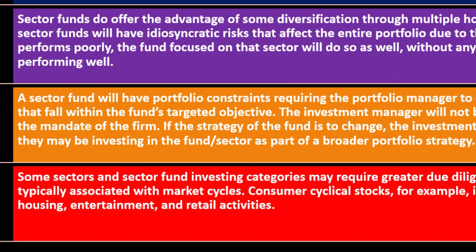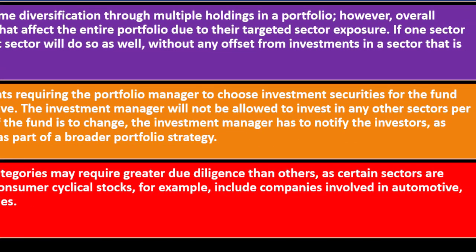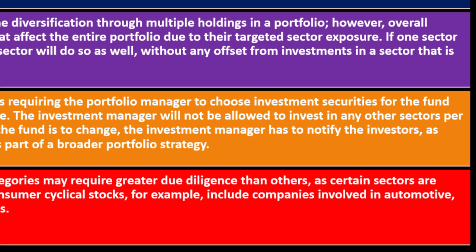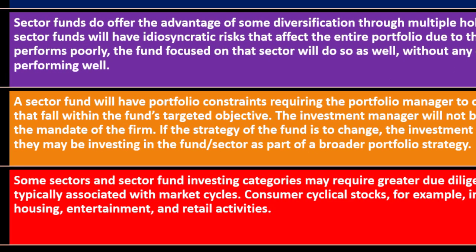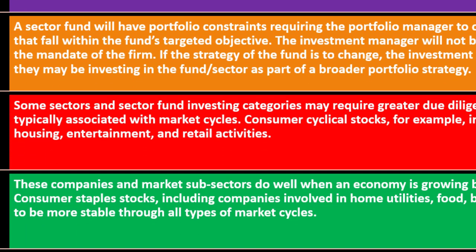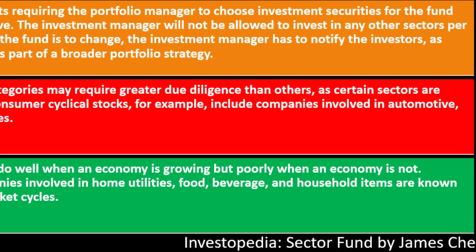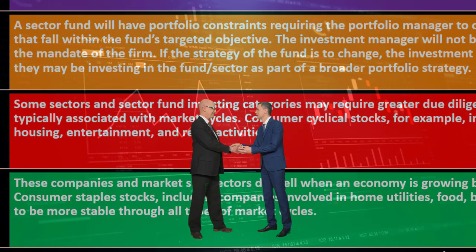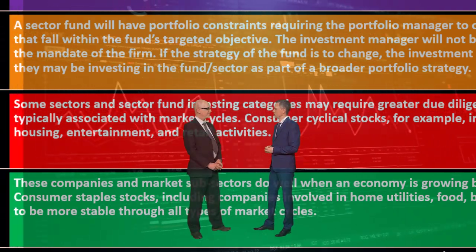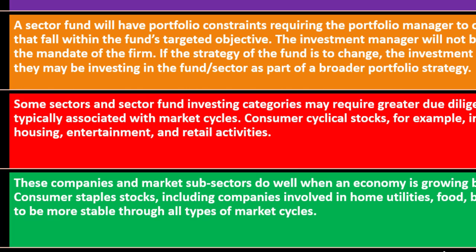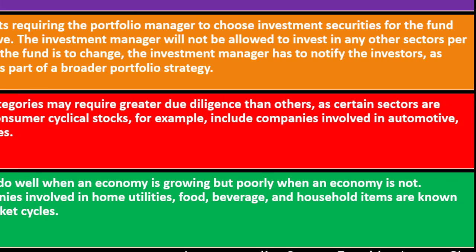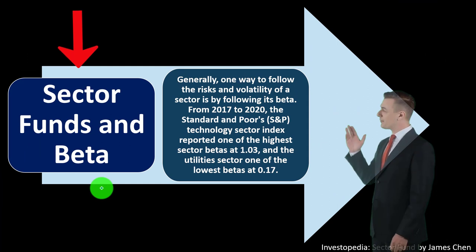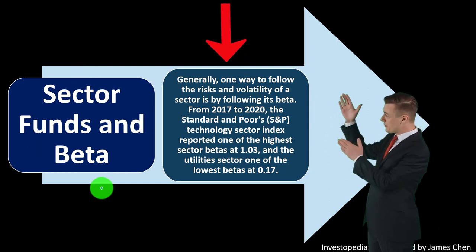Some sectors and sector fund categories may require greater due diligence, as certain sectors are associated with market cycles. Consumer cyclical stocks — companies in automotive, housing, entertainment, and retail — do well when an economy is growing but poorly when it isn't. Consumer staple stocks — companies in home utilities, food, beverage, and household items — are known to be more stable across all types of market cycles.